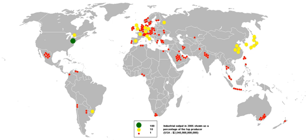Countries with a low per capita income are in an early state of development; the main part of their national income is achieved through production in the primary sector. Countries in a more advanced state of development, with a medium national income, generate their income mostly in the secondary sector. In highly developed countries with a high income, the tertiary sector dominates the total output of the economy.